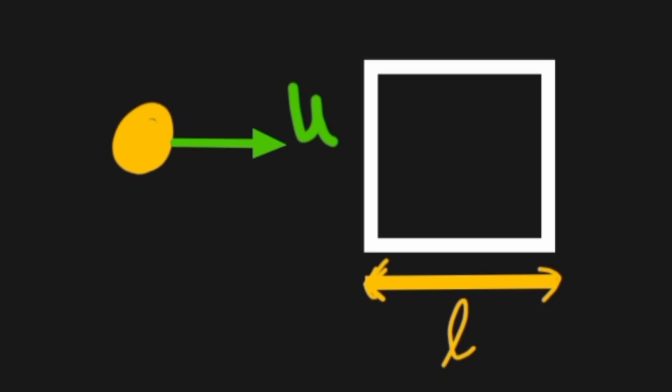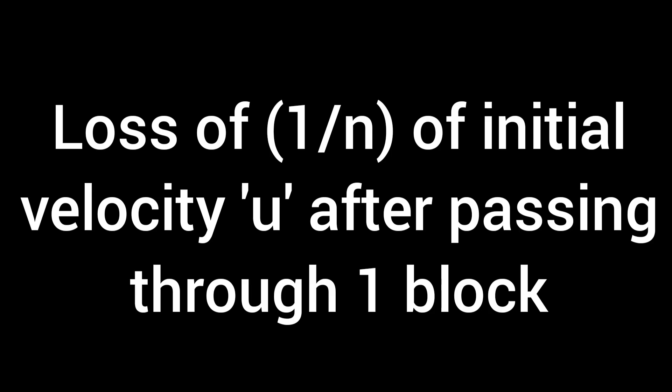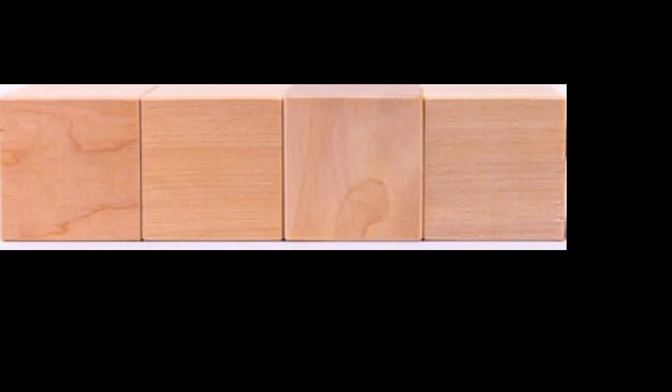So imagine we have a bullet moving at a certain initial velocity u. And when it passes through a block, it loses 1/n of its initial velocity. So we need to find out the number of blocks required to stop the bullet.